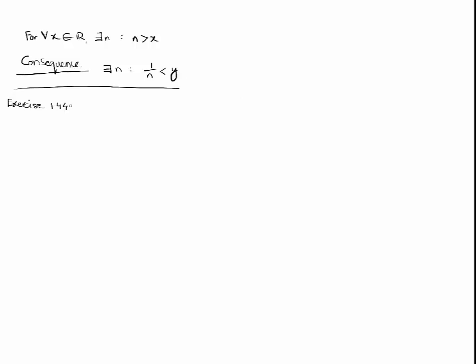Now, there is one exercise, 1.4.4, in Stephen Abbott's Understanding Analysis, which requires the proof that the infimum of 1 over n, such that n belongs to natural numbers, is 0. We are going to use the Archimedean property to prove this.